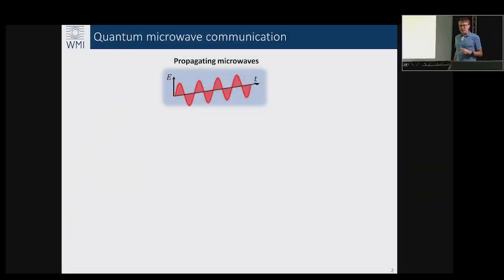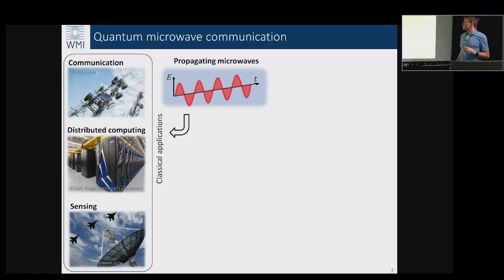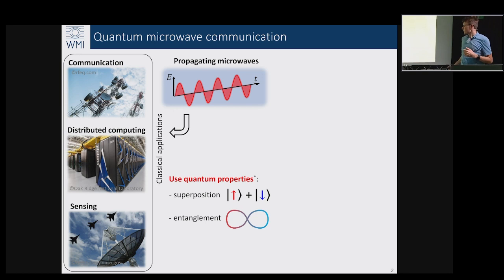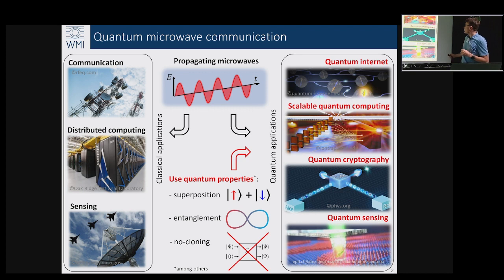In principle, propagating microwaves are very familiar to all of us because this is the basis for our classical communication, distributed computing, or sensing among multitude of classical applications. But of course we also know that for quantum mechanics nothing prohibits us to apply quantization rules to propagating microwave signals and use their quantum properties such as superposition, entanglement, or no cloning theorems to form the basis for quantum internet or scalable quantum computing, cryptography, sensing, all while being in the microwave range.